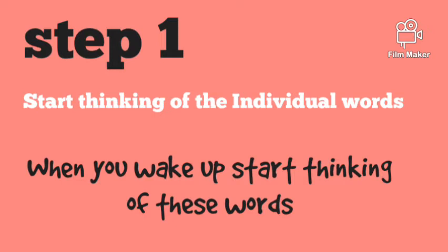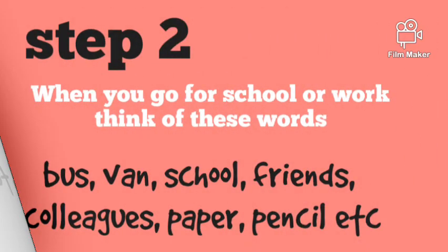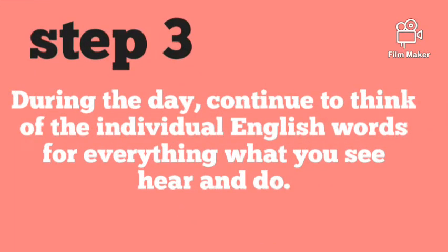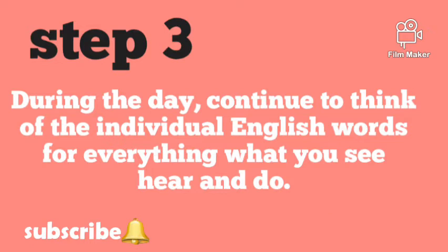Step one: start thinking of individual words. When you wake up, start thinking of these words — bed, toothbrush, tea, breakfast, and so on. When you go to school or work, think of these words — bus, van, school, friends, colleagues, paper, pencil, etc. During the day, continue to think of individual English words for everything you see, hear, or do.